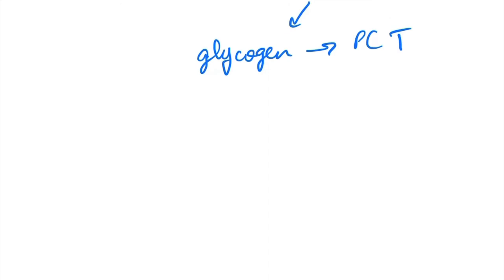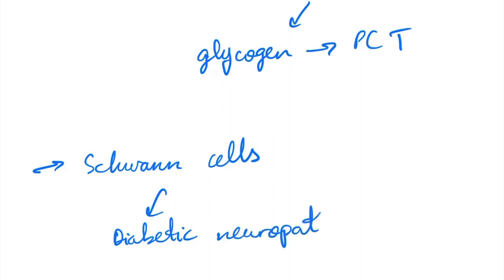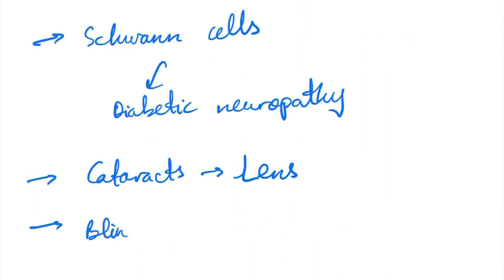Because of this hyperglycemic state, it can also affect Schwann cells, which can result in diabetic neuropathy, wherein the individual would have paresthesia, usually of the leg, the lower extremities, as well as it can cause cataracts by affecting the lens, as well as blindness, since this hyperglycemic state can affect nerve cells adversely.